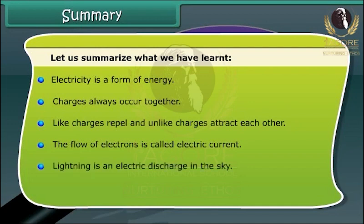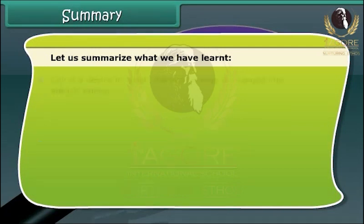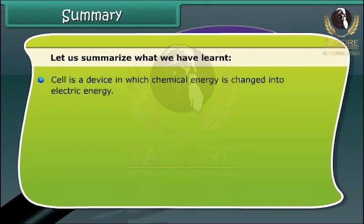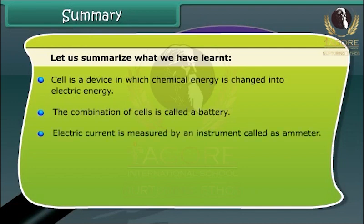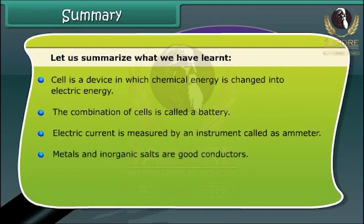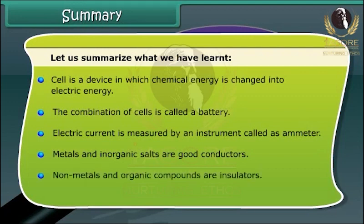Lightning is an electric discharge in the sky. Cells are sources of electric current. A cell is a device in which chemical energy is changed into electric energy. The combination of cells is called a battery. Electric current is measured by an instrument called ammeter. Metals and inorganic salts are good conductors. Non-metals and organic compounds are insulators.